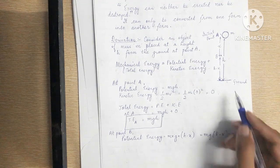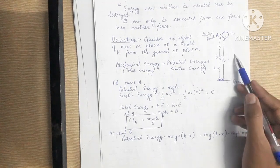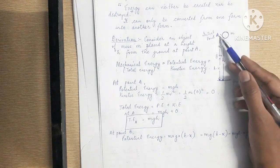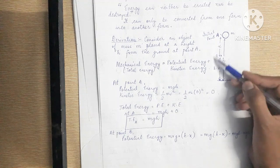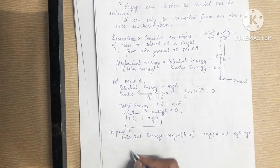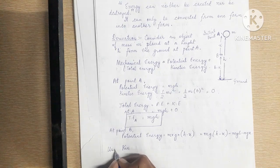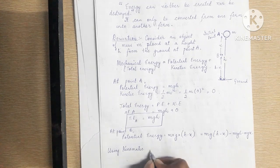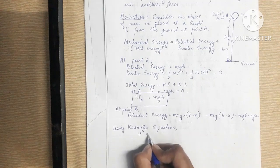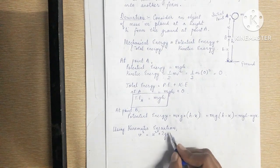Now we find kinetic energy at point B. Using the kinematic equation v² = u² + 2as, we know the initial speed at A is u = 0, acceleration is g (due to gravity), and displacement from A to B is x. So v² = 0 + 2gx = 2gx.